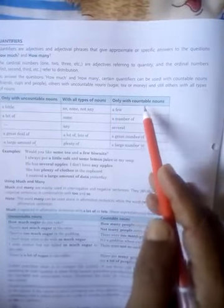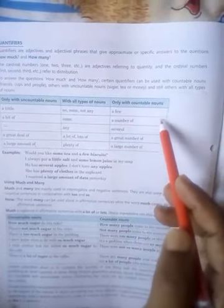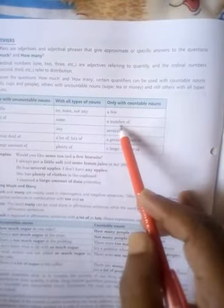Only with countable nouns, यह यह जो है सिर्फ countable nouns के साथ यूज करेंगे, जैसे a few है, a number of है, several है, a great number, a large number.